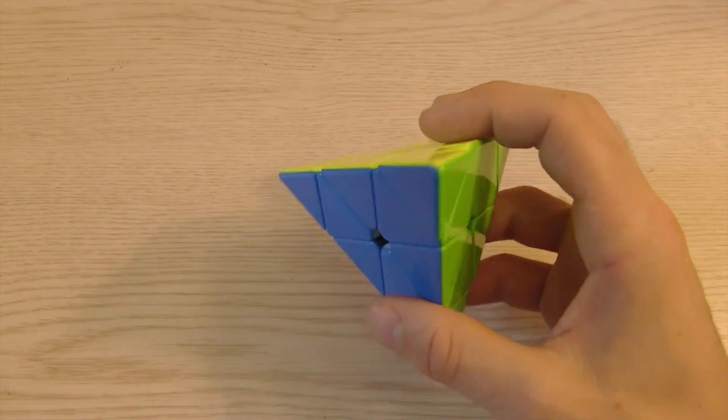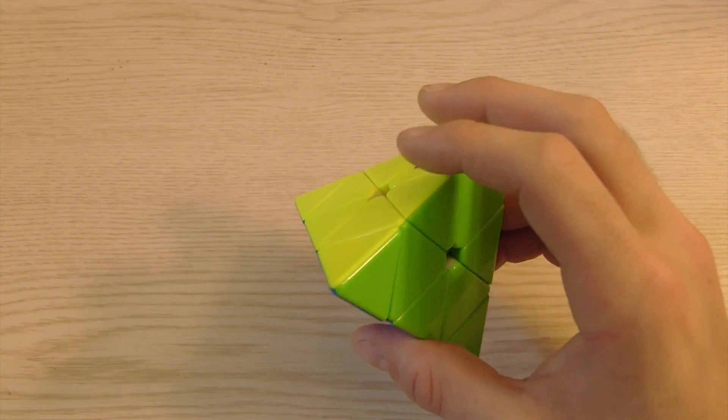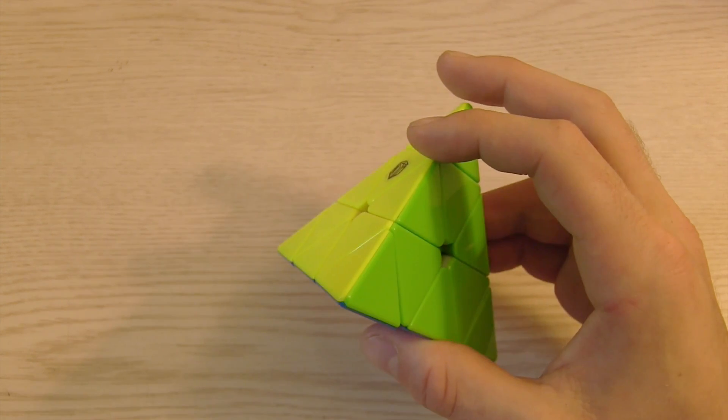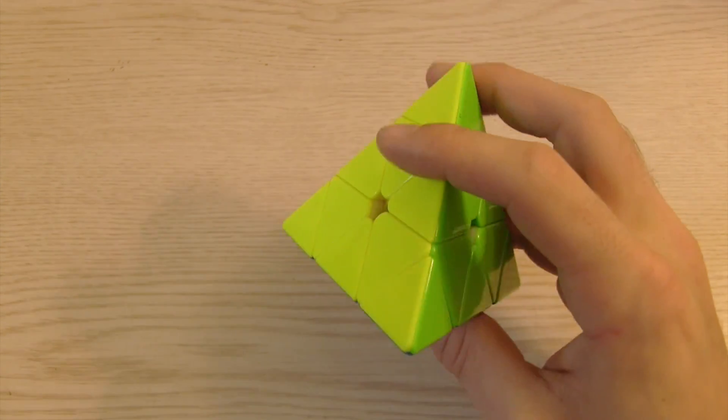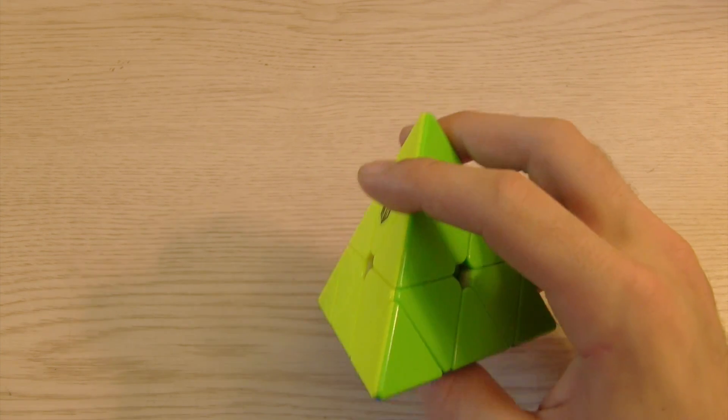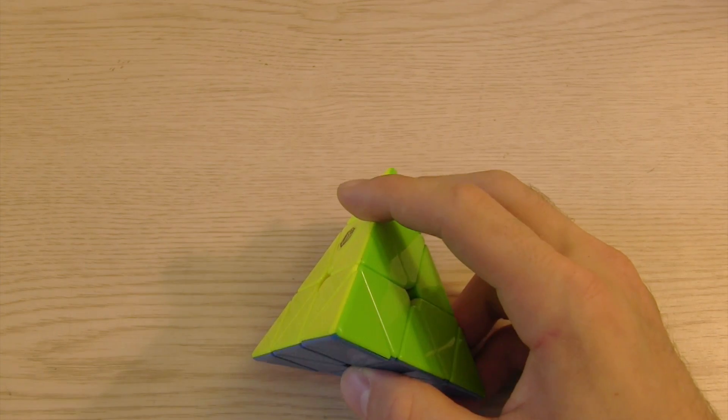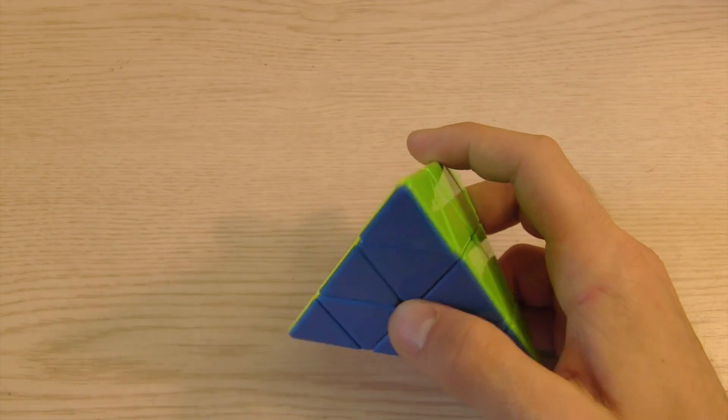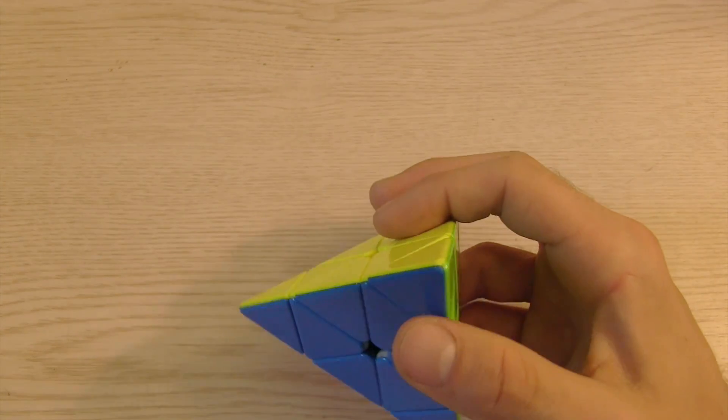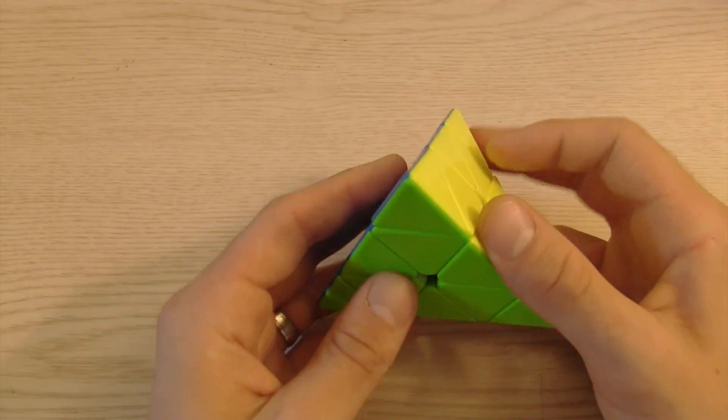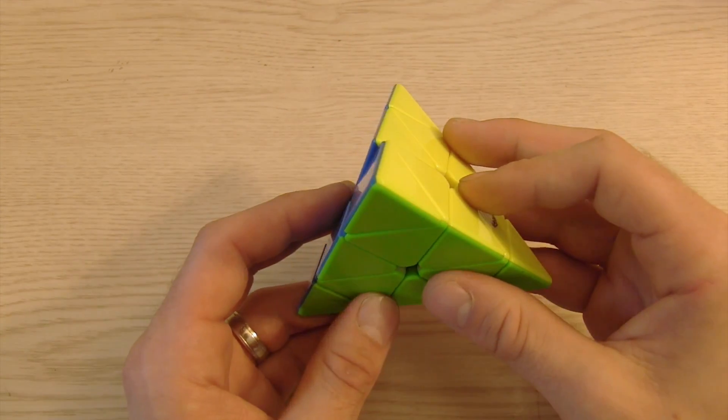From there what you can do is there's a lot more algorithms that you can learn for orienting the bottom layer while also solving that edge. But what you really want to do at this point is start trying to figure out where that edge is going to be ahead of time. So as you are orienting those bottom edges you already know where it's going to go and you just need to solve it and you just can track it that way. That's much easier and instead of learning a bunch of algorithms you start to figure out how it moves without needing too much memorization.